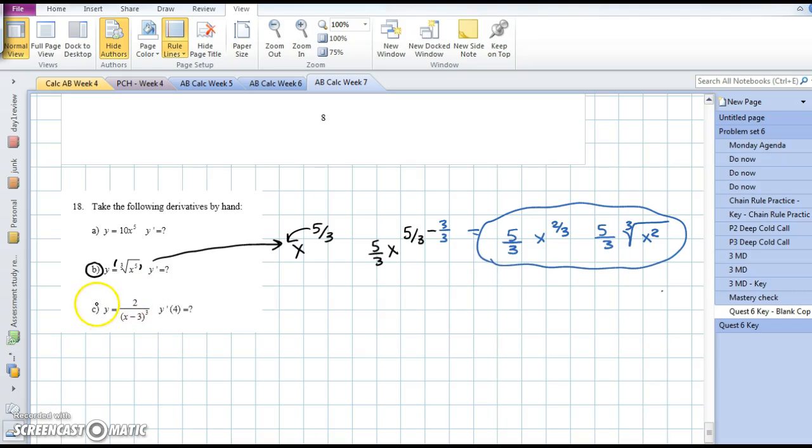Next, part C, we have a 3 in the denominator, and our brain should be screaming, bring that up as a negative exponent. So 2 times x minus 3 to the negative 3 power, and we want to find this when x is 4.